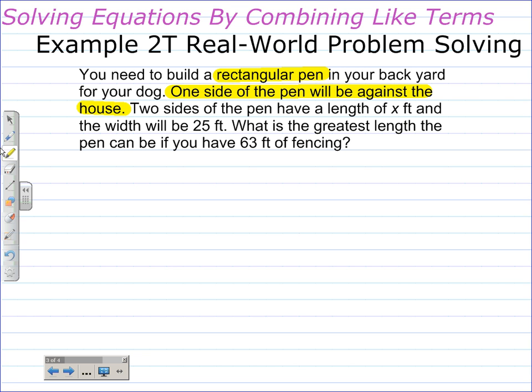The first part to this is really making a diagram. And you know you're going to need to have a rectangular pen in the backyard. And right here it tells you one side of the pen will be against the house. So that's not going to count towards our fencing. So let's make a diagram. And I find that for Algebra 1 students, this is the hardest thing for them to do is to create a diagram. So here I have a line representing the side of the house. Remember one part of the pen is going to be against the side of the house. Next, two sides of the pen have a length of X.